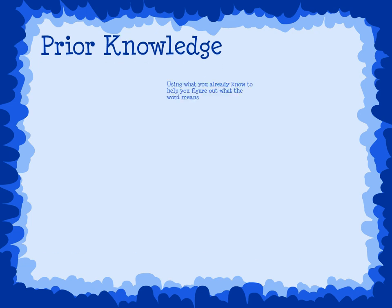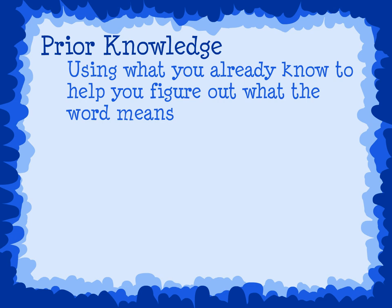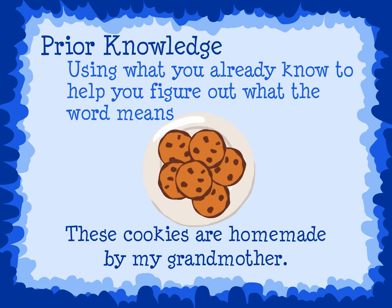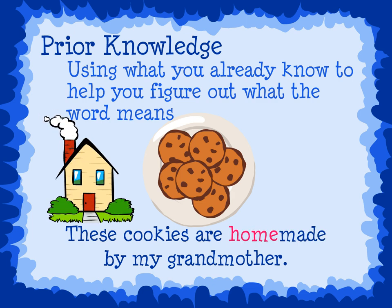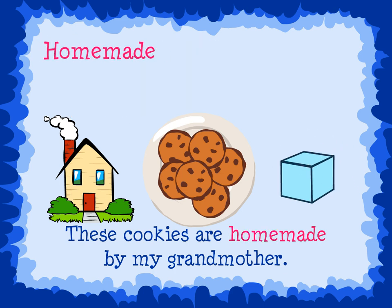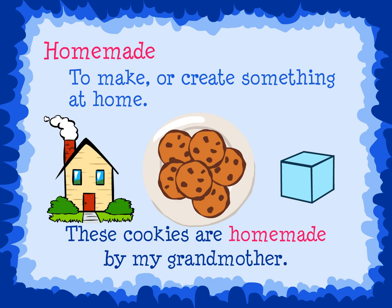Prior knowledge is using what you already know to help you figure out what the word means. For example: these cookies are homemade by my grandmother. We see the word homemade. If we use our prior knowledge, we can figure out what the word means. In the word homemade, I see the word home — home is a place where I live. I also see the word made in homemade; made means to make or create something. So homemade must mean to make or create something at home.